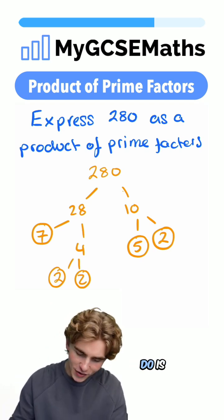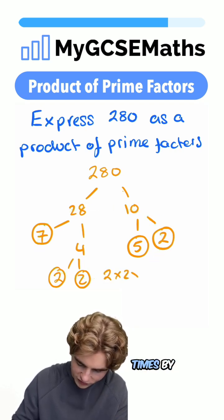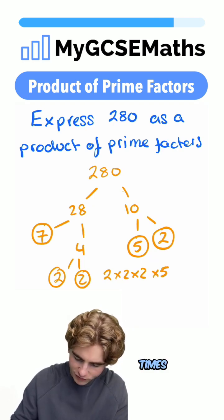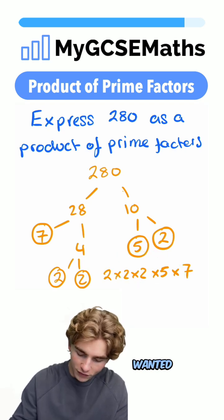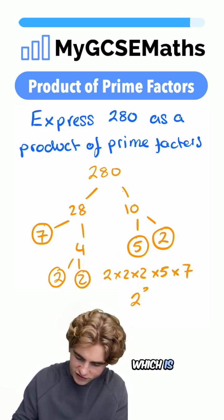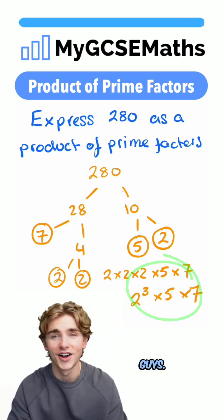Now all we're going to need to do is multiply our circled numbers together. We have three 2s, so we have 2 times by 2 times by 2. We have a 5, so times 5, and a 7, so times 7. Now to write this in index form, if we wanted to, we could write this as 2 cubed, which is 2 times 2 times 2, times by 5, times by 7. That is going to be our answer, guys.